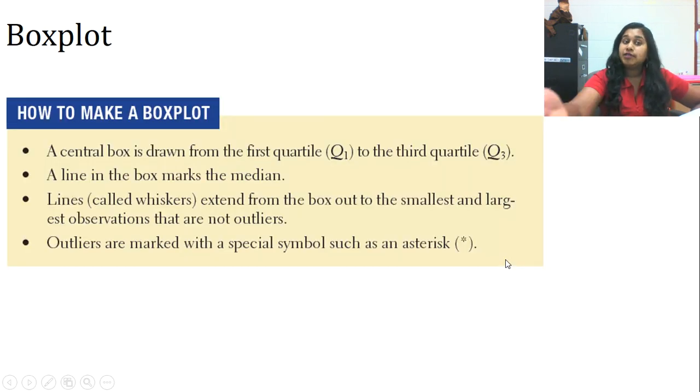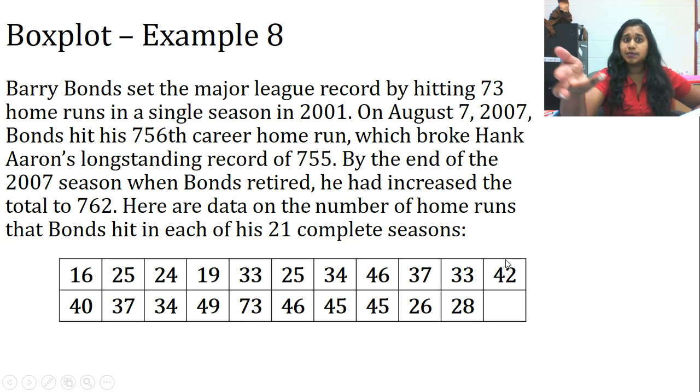How to make a box plot. Here's some information. You probably already feel comfortable with this, but just to kind of go back over that. Barry Bonds sets the major league record by hitting 73 home runs in a single season in 2001. On August 7, 2007, Bonds hit a 756 career home run, which broke Hank Aaron's longstanding record of 755. By the end of the 2007 season, when Bonds retired, he had increased the total number to 762. Here are data on the number of home runs that Bonds hits in each of his 21 complete seasons. We've got this data. It's not in any sort of order.